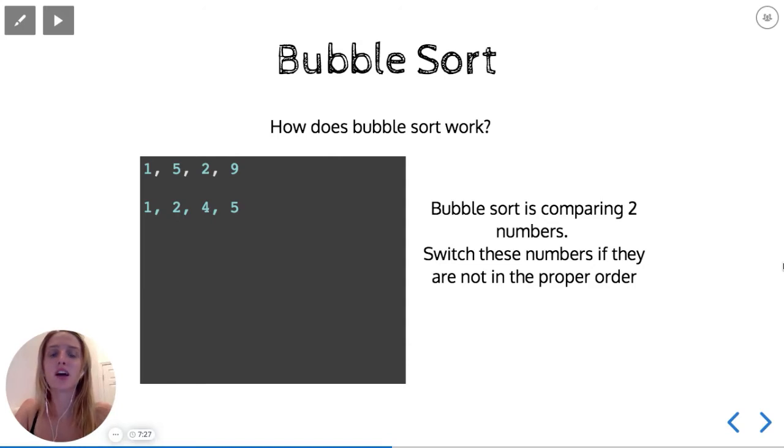Bubble Sort is just going through and comparing two numbers at a time, and it's switching these numbers if they are not in the proper order. So here we have a list or an array of 1, 5, 2, and 9.